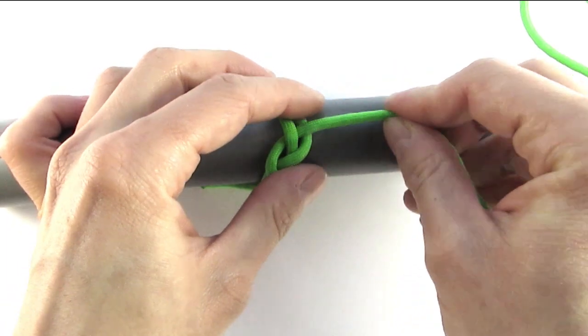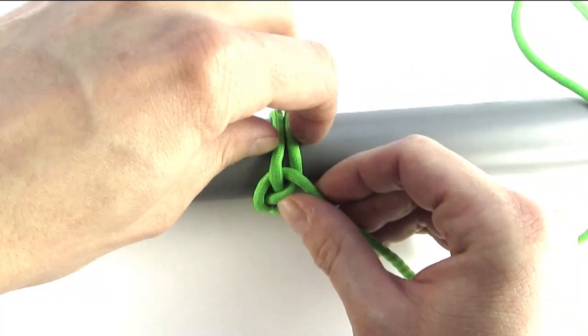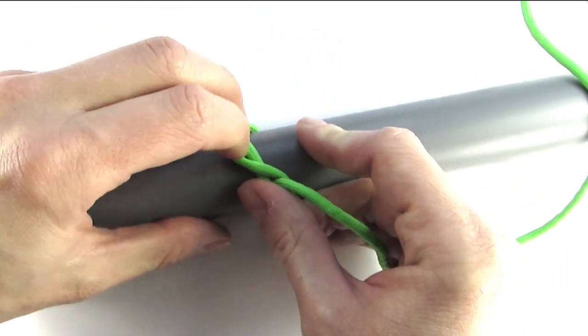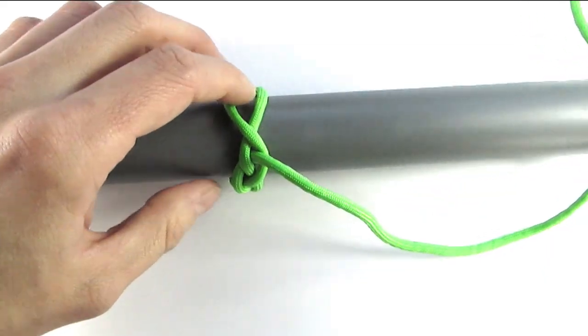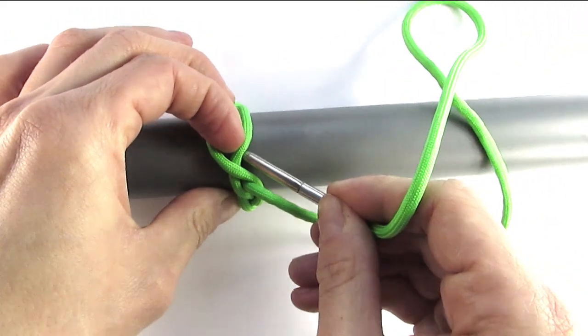This time we're going to take our top right cord, place it over the top left, then again with our working end we're going to go under, over to the left side.